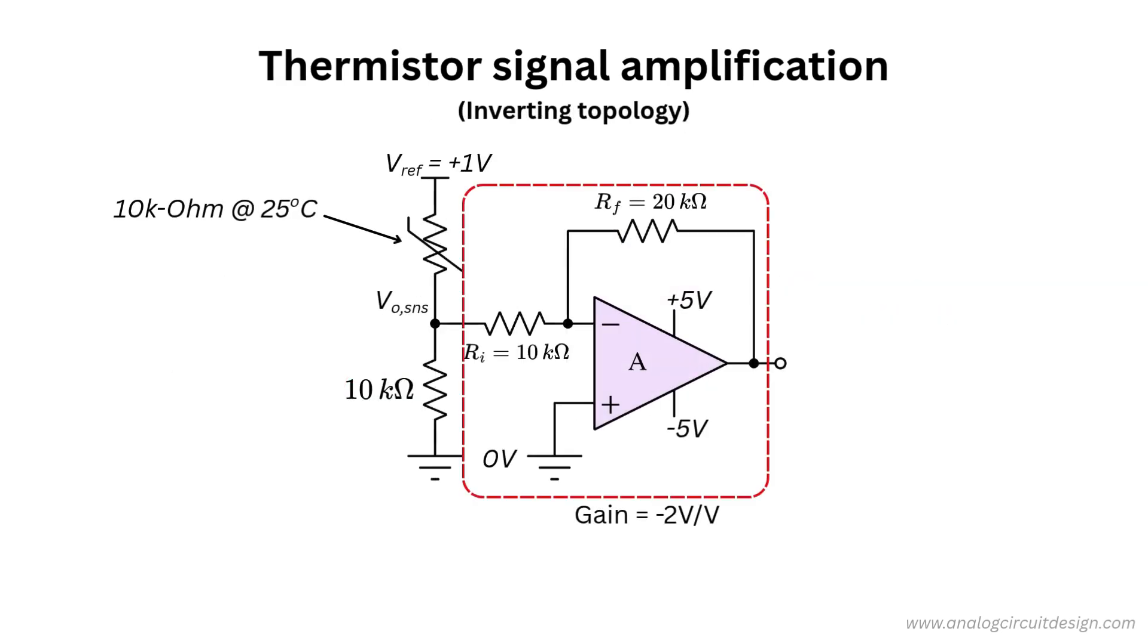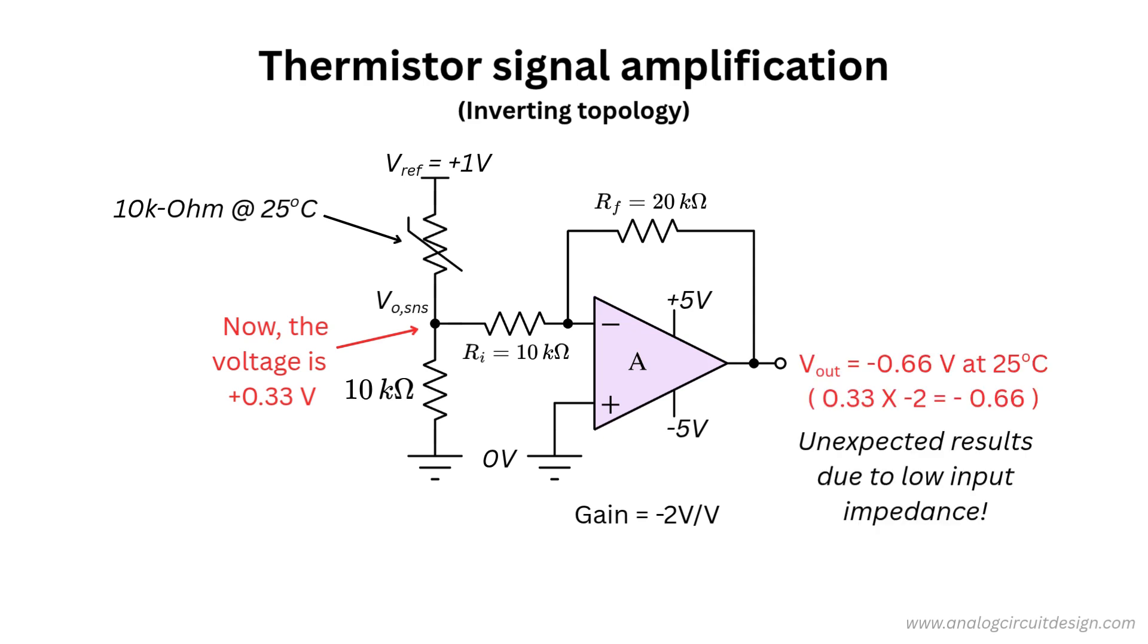In this setup, an inverting amplifier amplifies the sensor signal. The sensor connects to the input resistor, R-I equals 10 kilo-ohm, giving a low input impedance. The sensor output drops to 0.33 volt instead of 0.5 volt, making the amplifier output minus 0.66 volt instead of minus 1 volt. The error is due to input impedance loading on the sensor output. To conclude, the inverting configuration is not suitable for sensor readouts. Non-inverting configuration is more suitable.